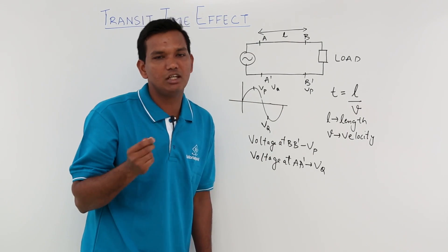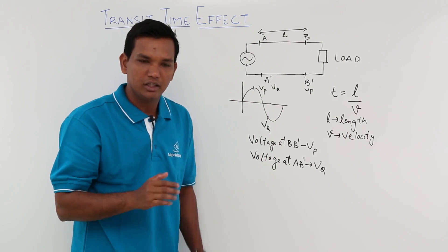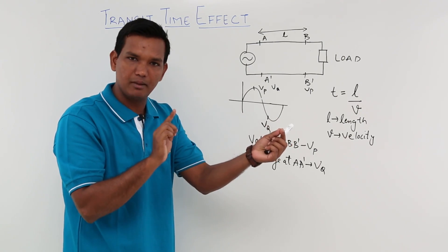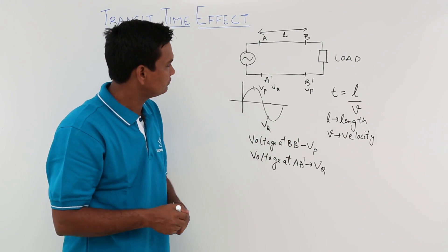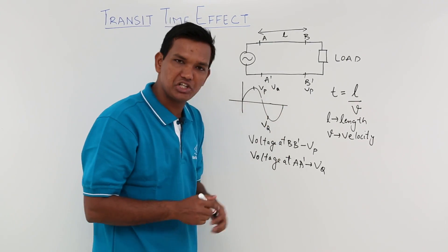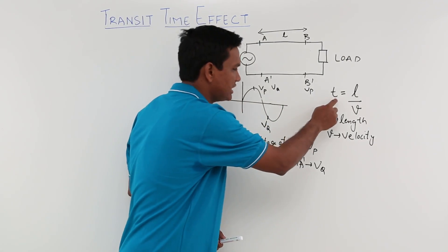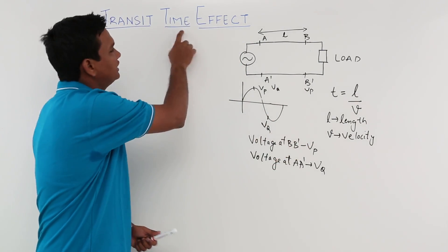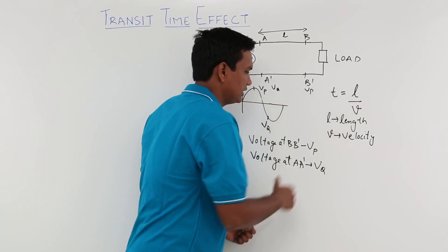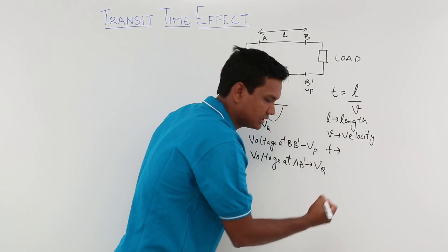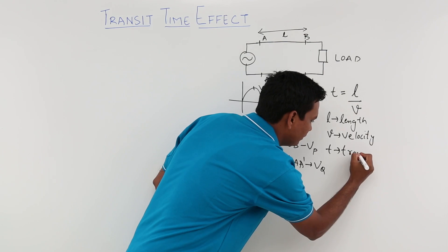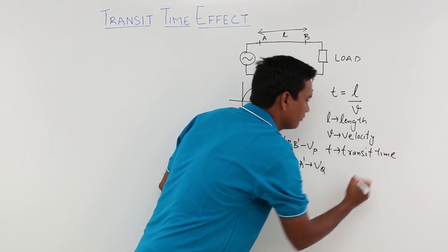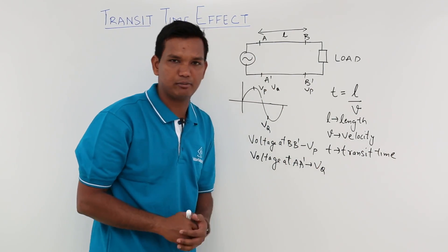Since the voltages at the two points are not the same, there will be a significant potential difference between them. We have some potential difference, and the time taken to travel this length is nothing but what is called the transit time. So this time is your transit time.